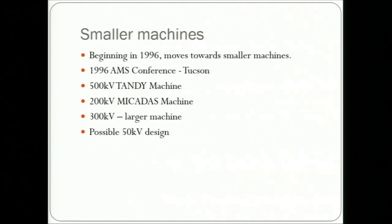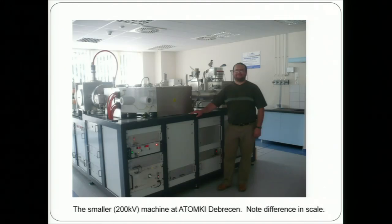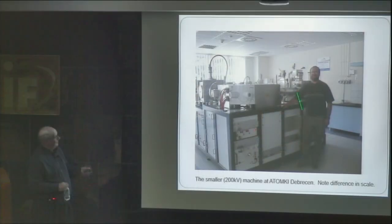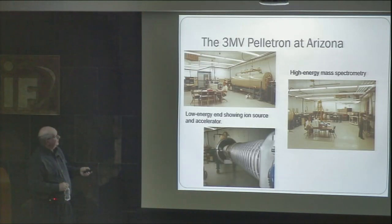The size of machines has been getting smaller since around 1996, when there was an AMS conference in Tucson where the first proposed smaller machine was discussed. Now we have machines going down to this size — this one in Hungary is a 200 kilovolt compact machine that only does carbon-14. It's about the size of a stable isotope mass spectrometer and can do C-14 measurements as well as a much larger machine.